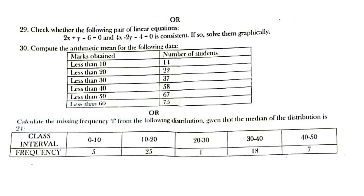Or calculate the missing frequency f from the following distribution given that the median of the distribution is 24. The class intervals and frequencies are: 0–10: 5, 10–20: 25, 20–30: f, 30–40: 18, 40–50: 7. Calculate the missing frequency f.